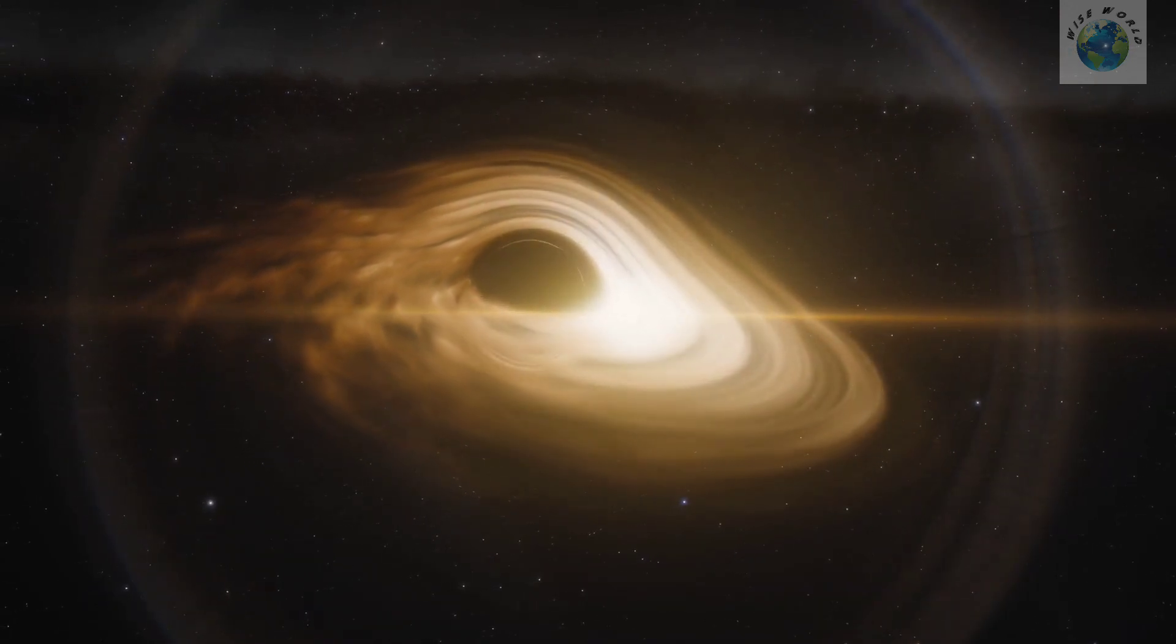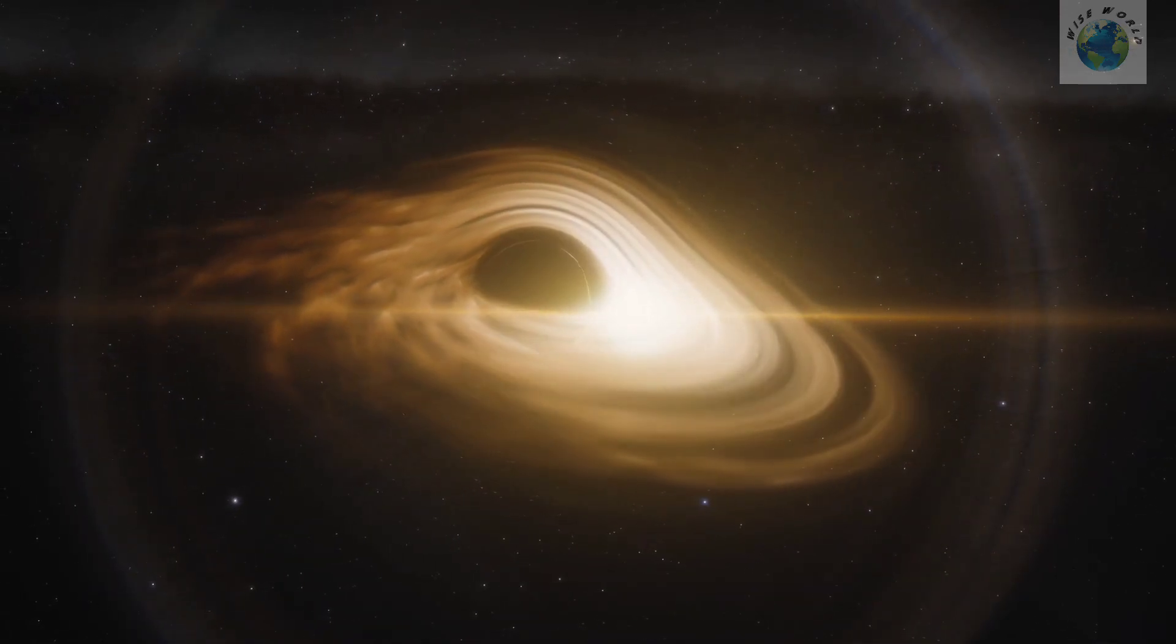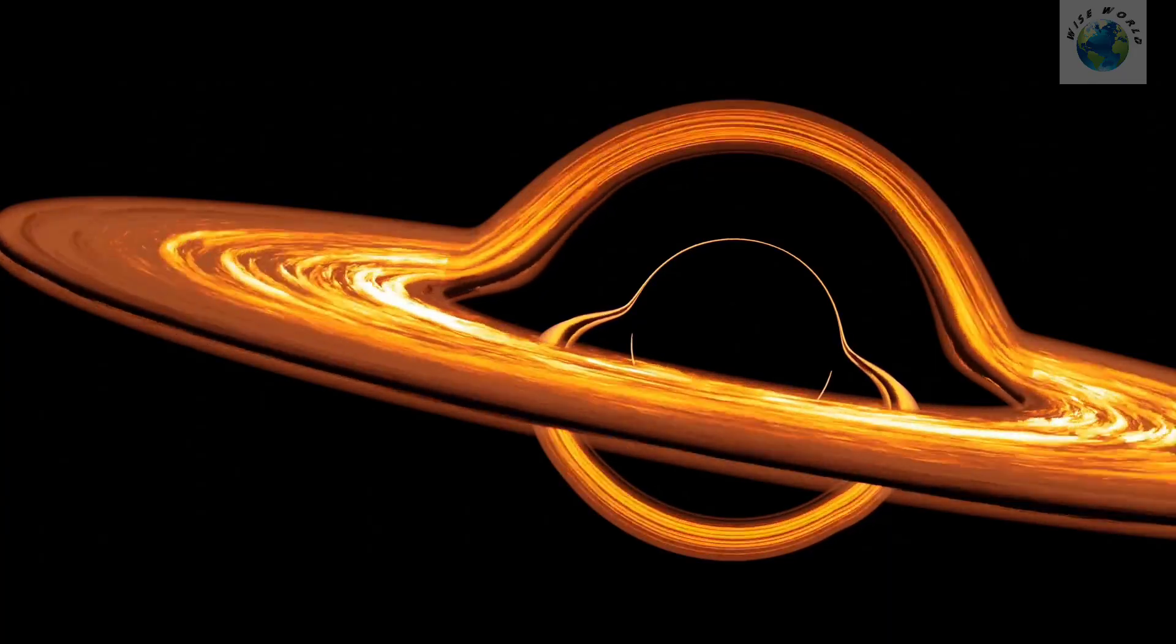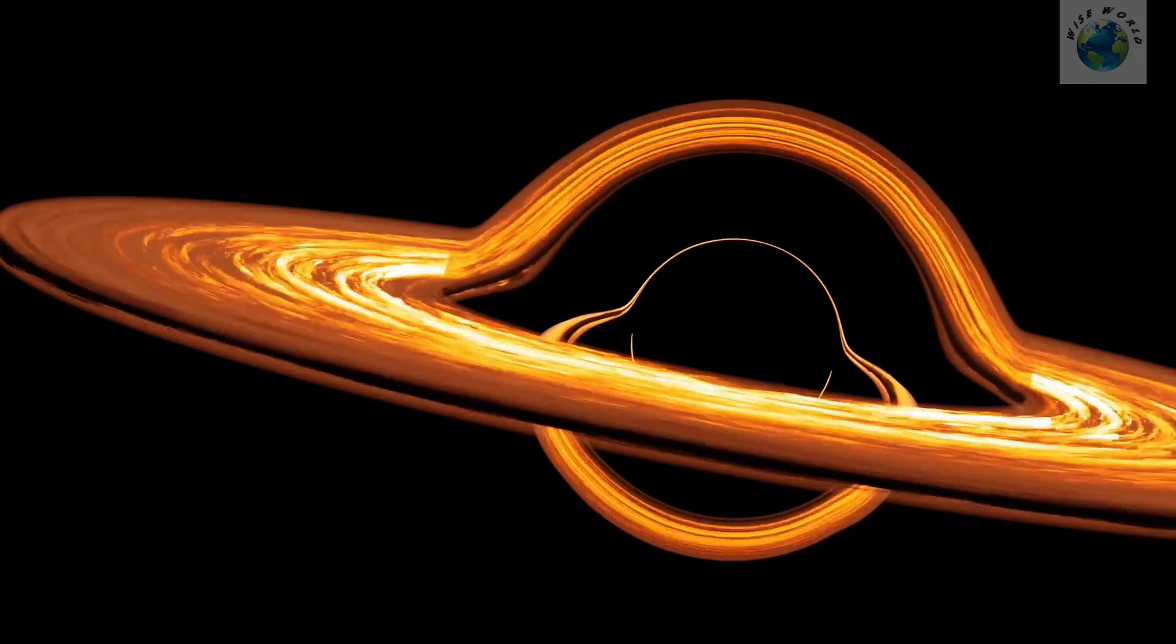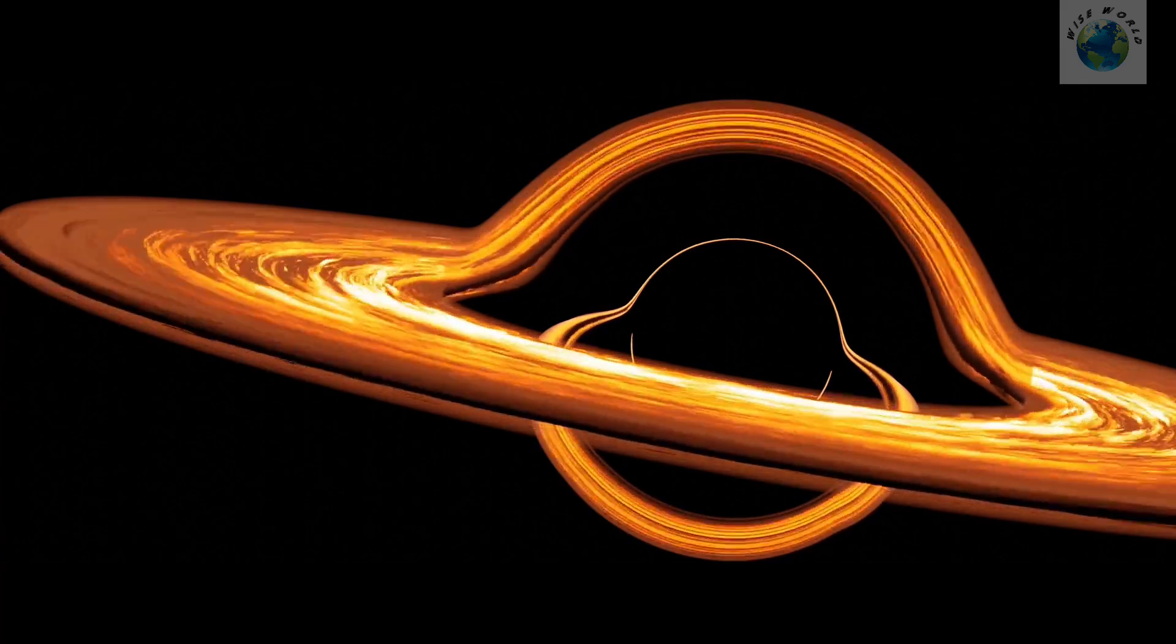Imagine two twins, one stationed near a black hole and the other far away. As time passes, the twin near the black hole would age slower than the twin farther away. This is because gravity warps time itself.